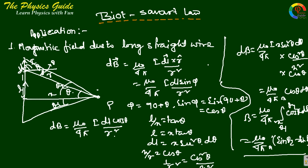For the direction, using the corkscrew rule — imagine a screw going in the direction of the current. We rotate along that direction, and the magnetic field is perpendicular to both dL and R, pointing inward into the board. The magnitude is mu₀ by 4πx times (sinθ₂ minus sinθ₁).